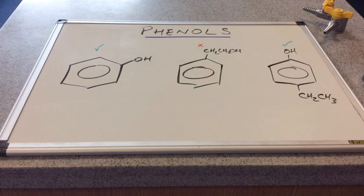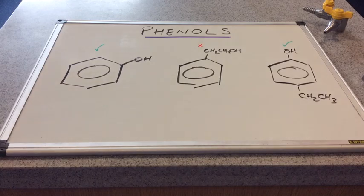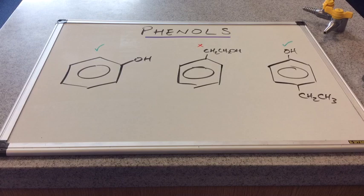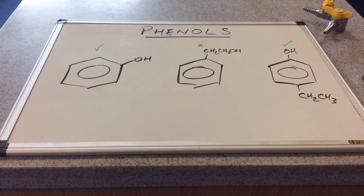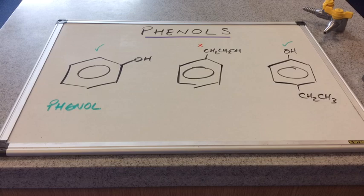So we may as well go back to those three molecules I drew up at the start. The first one and the last one are phenols, so I've given them those green ticks. The middle one isn't a phenol. We'll name it anyway. So we'll start with the first one. This is the simplest of all the phenols, and it's just called phenol.